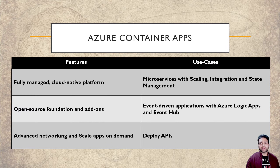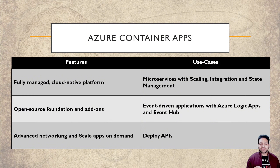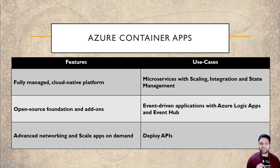Now moving on to Azure Container Apps. ACA is a fully managed serverless container platform designed for running microservices and containerized applications. Similar to ACI, the underlying infrastructure is managed by Microsoft. Azure Container Apps works on AKS in the background, which is managed by Microsoft, so it provides different Kubernetes features like event-driven Kubernetes auto-scaling as well as distributed application runtime for state management.